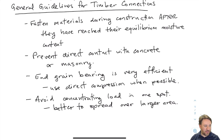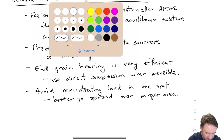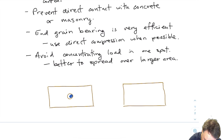Compression parallel to grain is best, but even compression perpendicular is better than relying on the splitting strength of a piece of wood. Another thing is that we want to avoid concentrating load in one spot, and that also has to do with tension perpendicular to grain strength. I'll draw a picture to explain why that's the case.